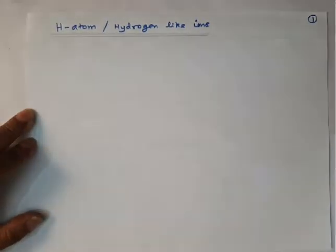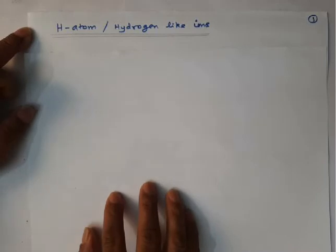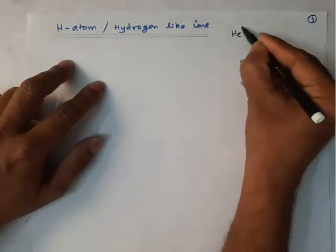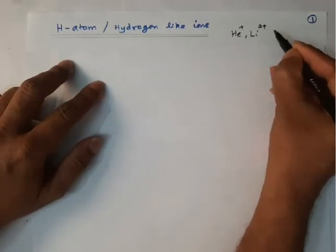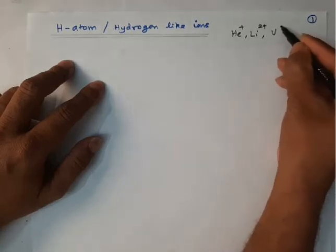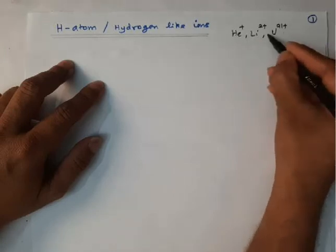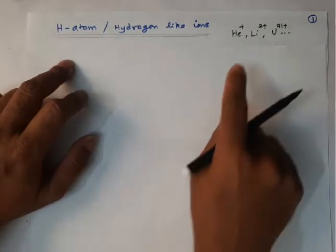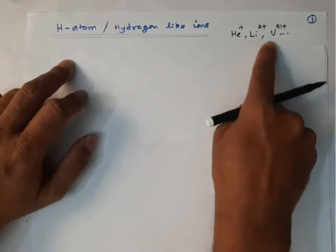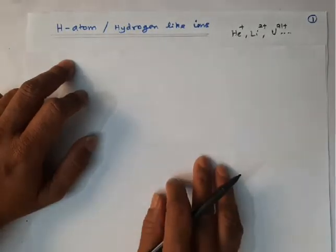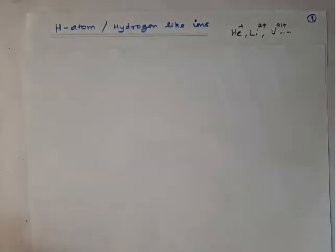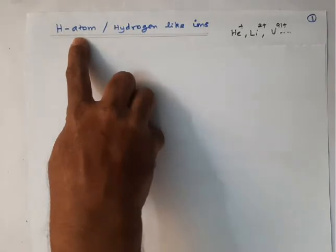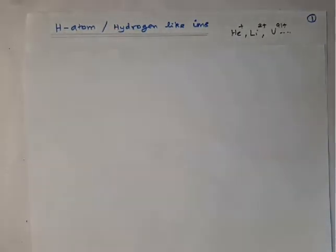We are going to discuss the hydrogen atom problem, which is also applicable for hydrogen-like ions. Hydrogen-like ions include helium ion He+, lithium ion Li2+, and uranium 91+ — all these ions consist of only one electron and one nucleus. Therefore, all these ions are called hydrogen-like ions.